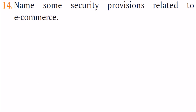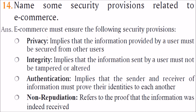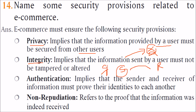Name some security provisions related to e-commerce. E-commerce must ensure: Privacy — information provided by the user must be secured from other users. Integrity — the information sent must not be tampered or altered. Authentication — the sender and receiver must prove their identity to each other. Non-repudiation — once things are sent, the other party cannot deny receiving them.